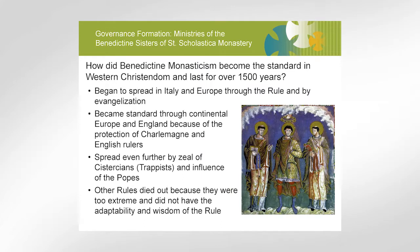So how did Benedictine monasticism become the standard in all of Western Christendom and last for over 1500 years? It began to spread slowly in Italy and in some places in Europe through the rule and by evangelization. But it became standard because of the protection of royalty. In the continental part of Europe, Charlemagne mandated that it was the only rule that was going to be used, and in England the rulers did the same thing.